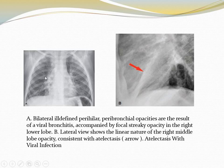Like in this case, there are perihilar peribronchial opacities resulting from viral bronchiolitis, accompanied by focal citric opacity in the right lower zone. The lateral view shows linear opacity in the right middle zone indicating atelectasis. When there is linear opacity, that indicates atelectasis associated with viral infection.